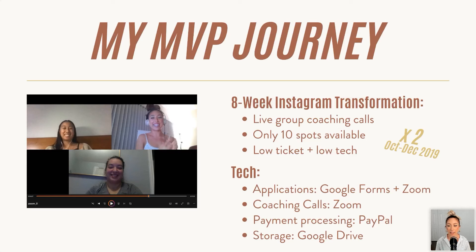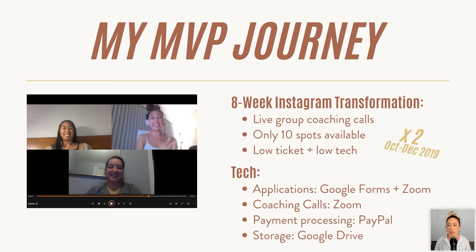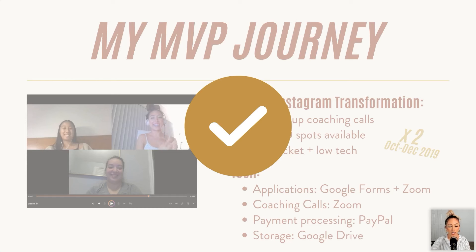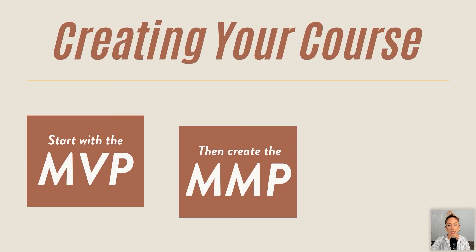I accepted applications through Google Forms for free. Anyone wanting to join applied and I'd get on a Zoom call to make sure they were a good fit before accepting any payment. Coaching calls were on Zoom, payment processing through PayPal, and I backed up all Zoom recordings onto Google Drive so students could watch replays even if they couldn't join live. That was my first version of the Modern Influencer — it cost me nothing to launch, and once the MVP was done I was seeing results with students, so I moved on to create my MMP.